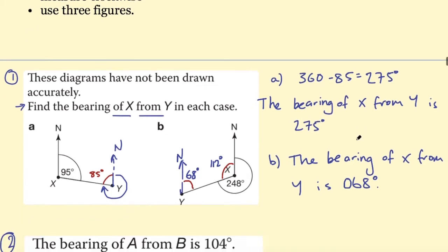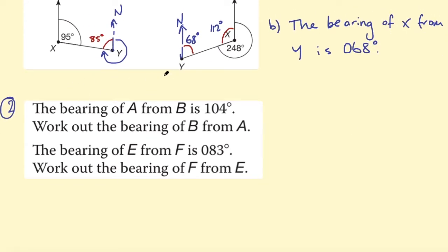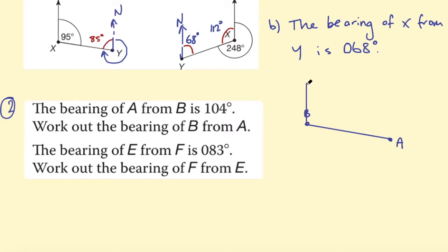Moving on to question 2. Before I've even read the question, I know I'll probably have to draw a diagram since none is given. Question 2 part A says: the bearing of A from B is 104 degrees — work out the bearing of B from A. We have two points; I'm starting at B and traveling towards A at a bearing of 104 degrees, so I draw B first with a north line, placing A at roughly 104 degrees.